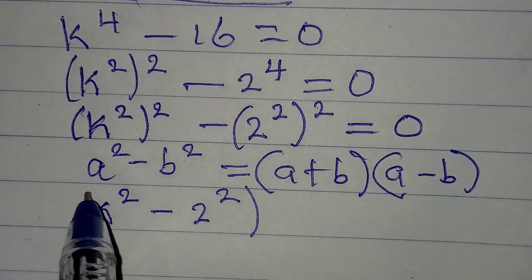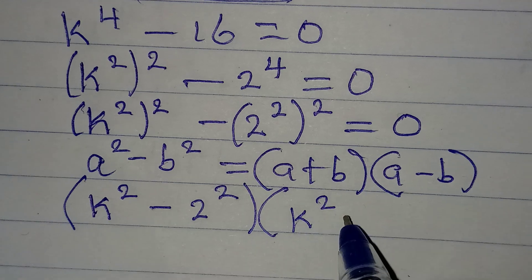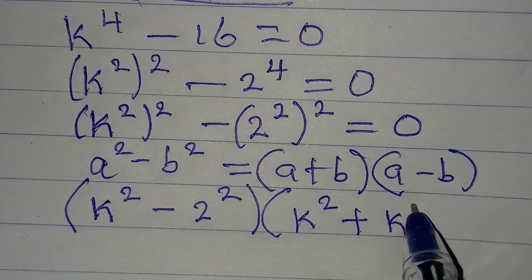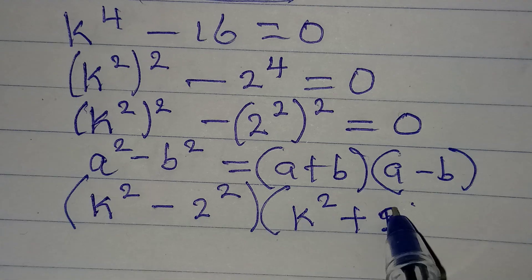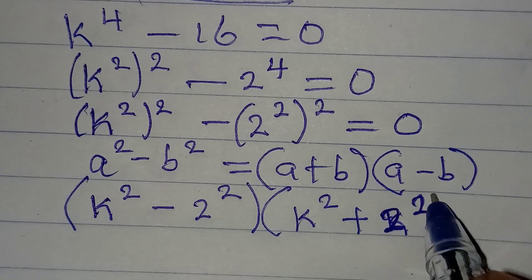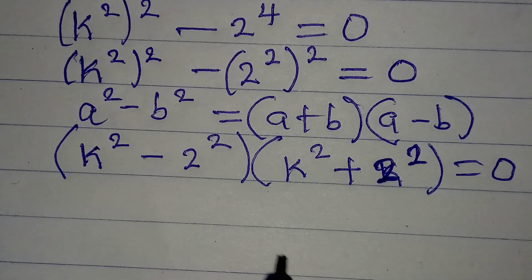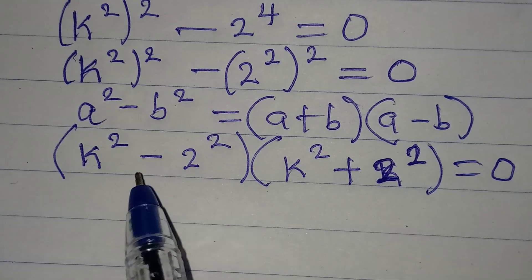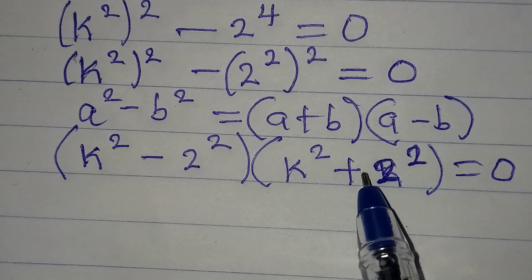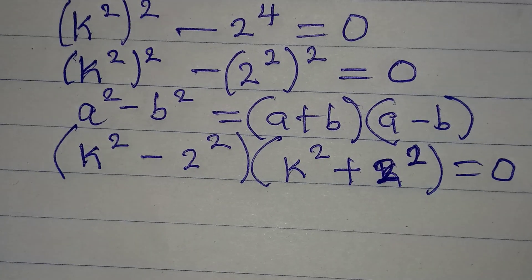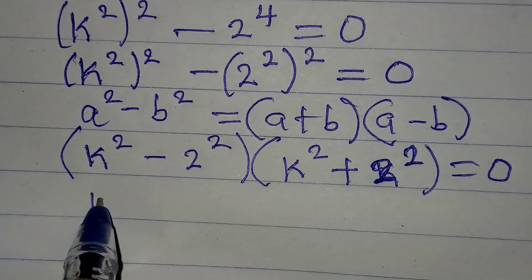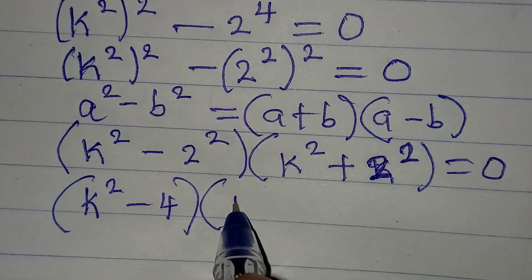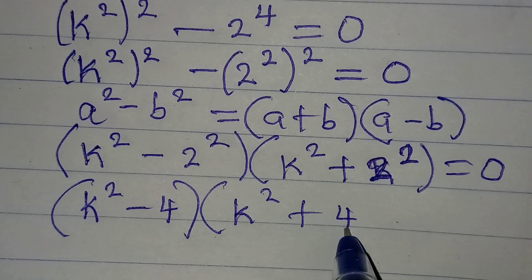Applying the difference of two squares, we will have k squared minus 2 squared in one bracket, and k squared plus 2 squared in the other bracket, all equal to zero. It does not matter which bracket comes first. Simplifying, we get k squared minus 4 in one bracket and k squared plus 4 in the other.